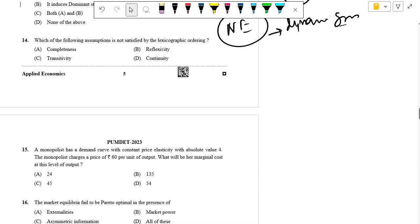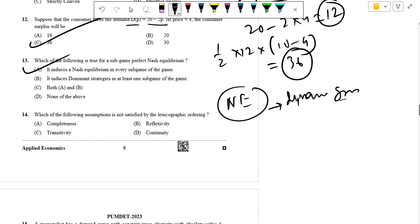The statement about inducing dominant strategy is not necessarily true. In a sub-game perfect Nash equilibrium, strategies must form a Nash equilibrium in every sub-game, but there is no requirement for dominant strategies to exist in every sub-game.